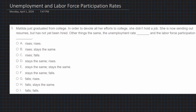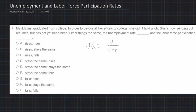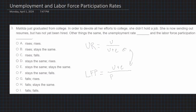The first thing is understanding what is the unemployment rate and what is the labor force participation rate — there are two equations associated with this. The unemployment rate, UR, is unemployment (U) over U plus E, where E is employed. And then we have the labor force participation rate, which is that same denominator — U plus E — over the population.